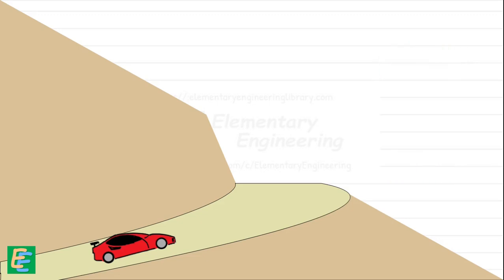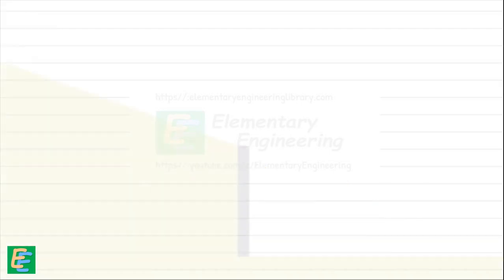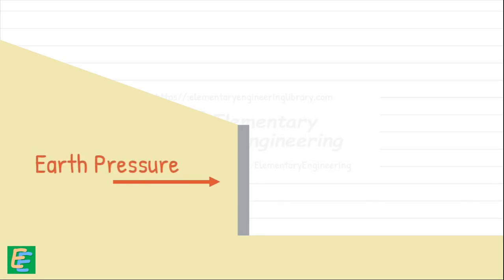Without a retaining wall, the soil from the steep slope would slide down, making the slope unstable. The soil that the wall is holding back exerts pressure on the wall. And this pressure is called earth pressure.